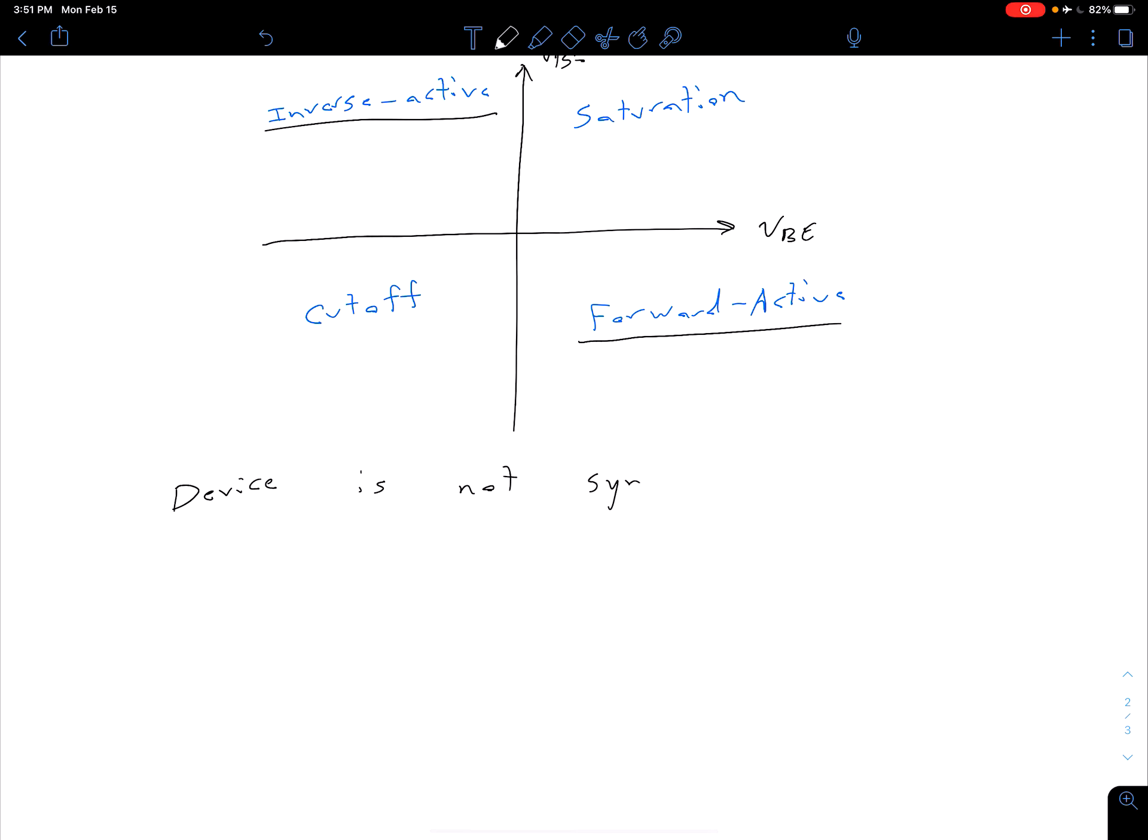Device is not symmetrical. What that means is it's going to matter which terminal we are treating as the emitter and which terminal we're treating as a collector. There's going to be some geometry differences, but even more important is we're going to have different doping levels in the different regions, different doping concentrations between our emitter and collector.